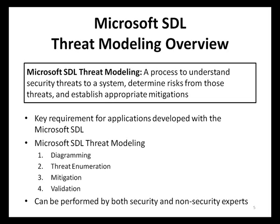The Microsoft SDL threat modeling process is broken into four major steps: diagramming, threat enumeration, mitigation, and validation. In the diagramming step, the application being threat modeled is expressed as a data flow diagram to drive the overall risk analysis process. During threat enumeration, threats to the modeled system are identified. After threats have been identified, mitigations are selected during the mitigation step. Finally, during the validation step, threat models are validated for completeness and accuracy.